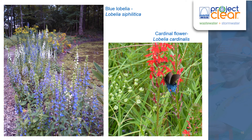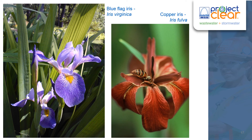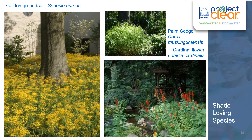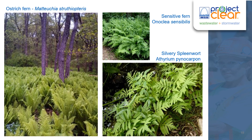A few more examples: blue lobelia and cardinal flower. Here's both blue flag iris and copper iris. To be specific about some shade-loving species, we've got golden groundsel, palm sedge again, and cardinal flower once more. Also ostrich fern, sensitive fern, and silvery spleenwort.